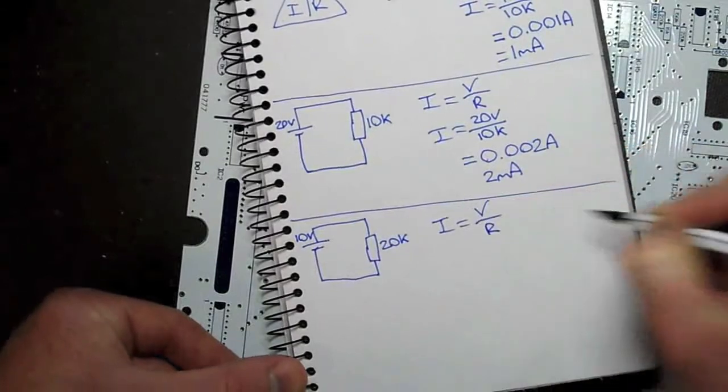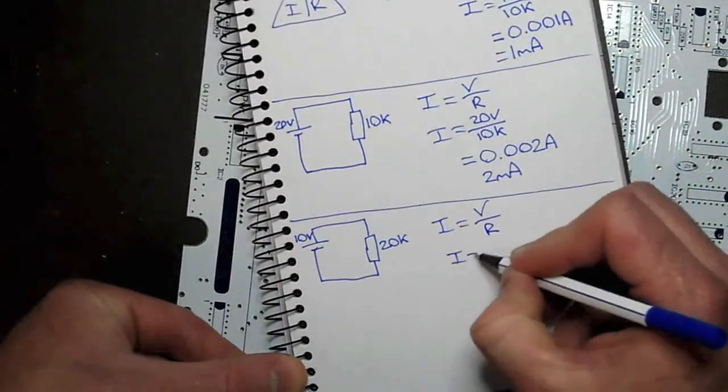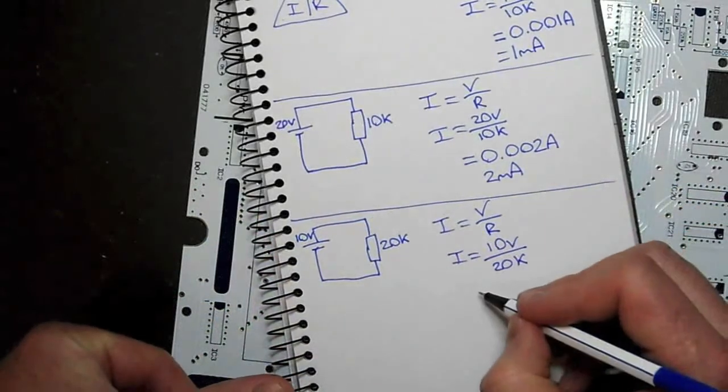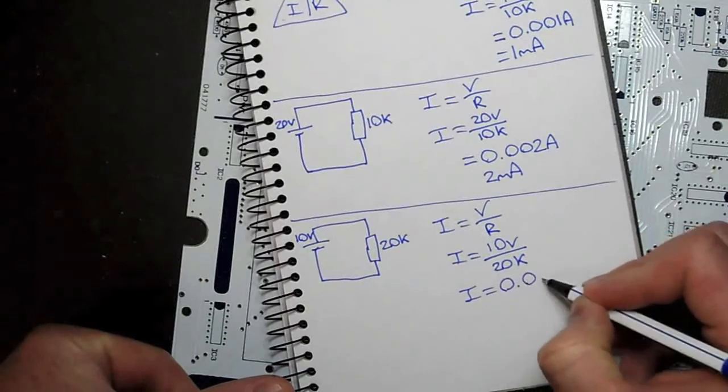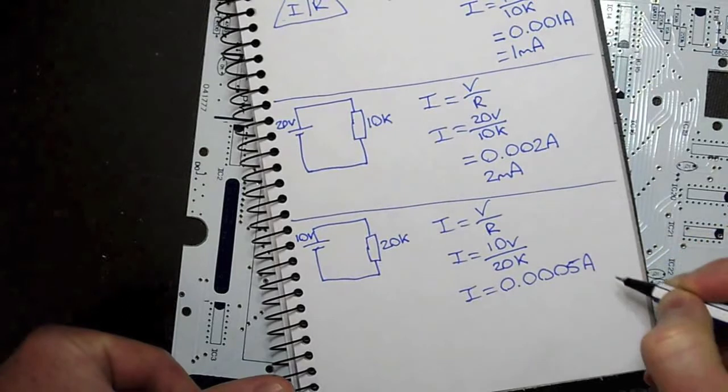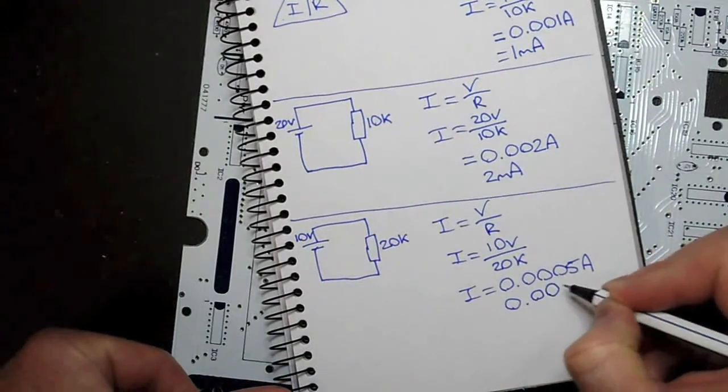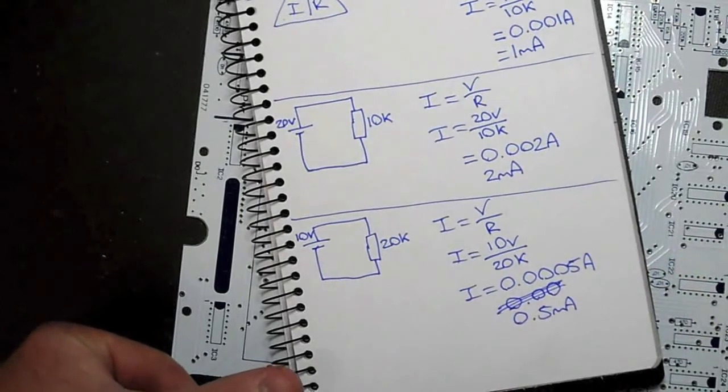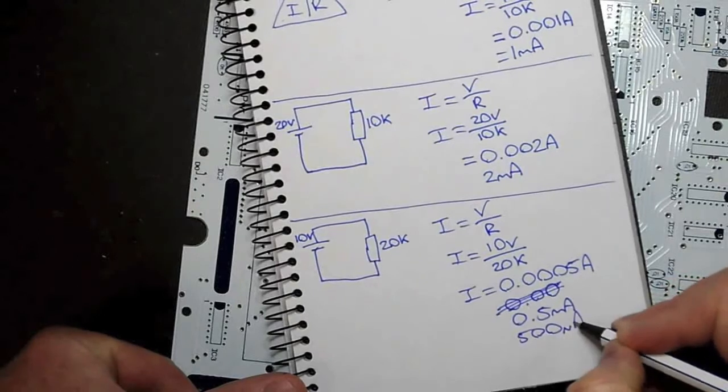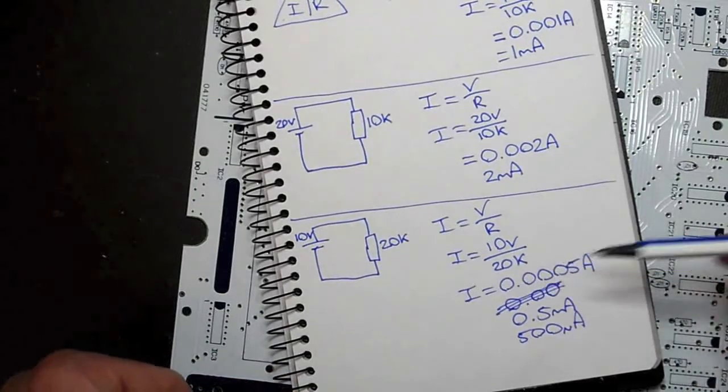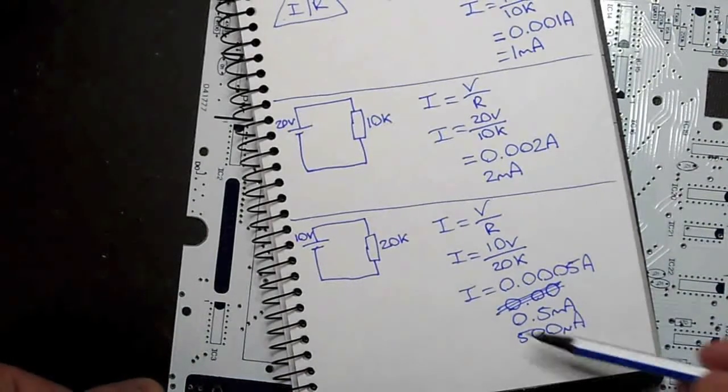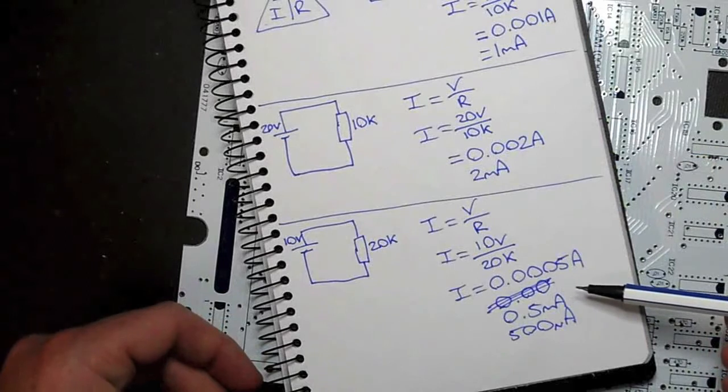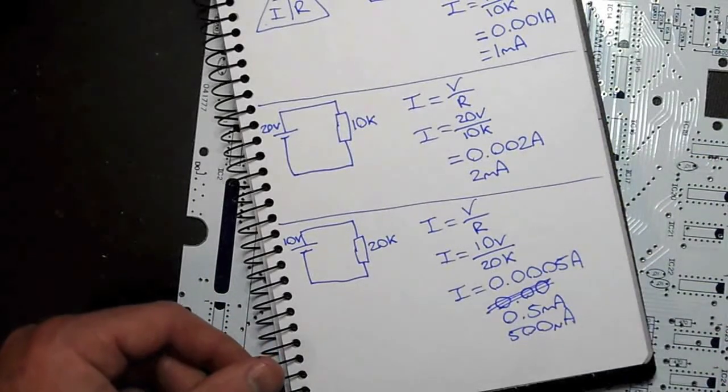Current equals voltage divided by resistance. We know there's 10 volts, and now we've got 20K, 20,000 ohms. Punch that into your calculator. We will get 0.0005 amps, or 0.005 milliamps. Probably best to express it as 500 microamps. So we've got 0.0005 amps. We could express it as half a milliamp. So we've gone from 1 milliamp to now half. Or we could write it as 500 microamps. Makes sense.